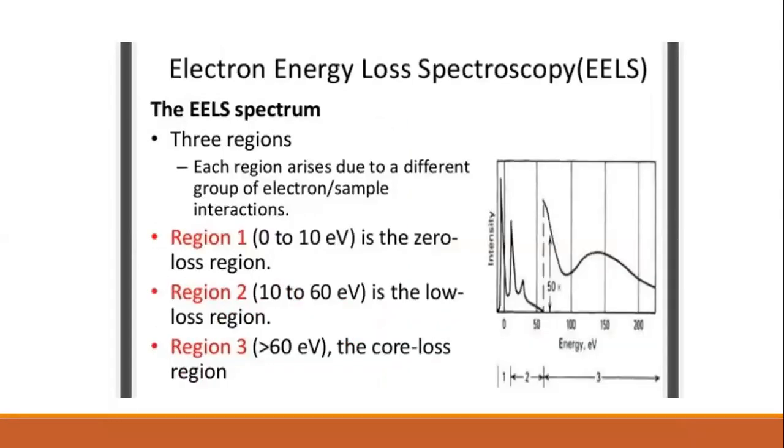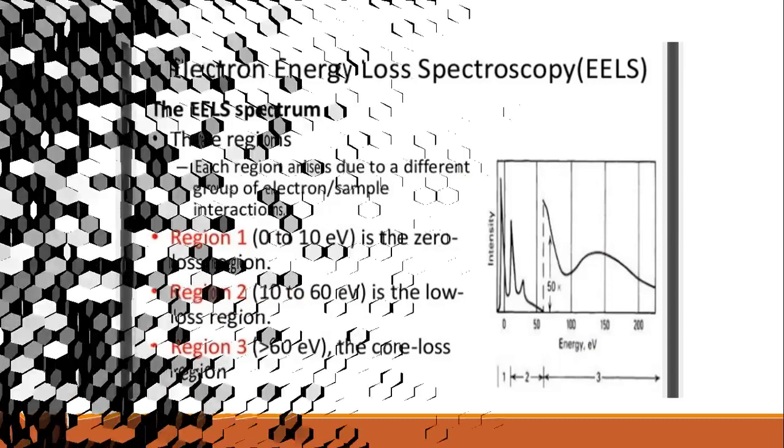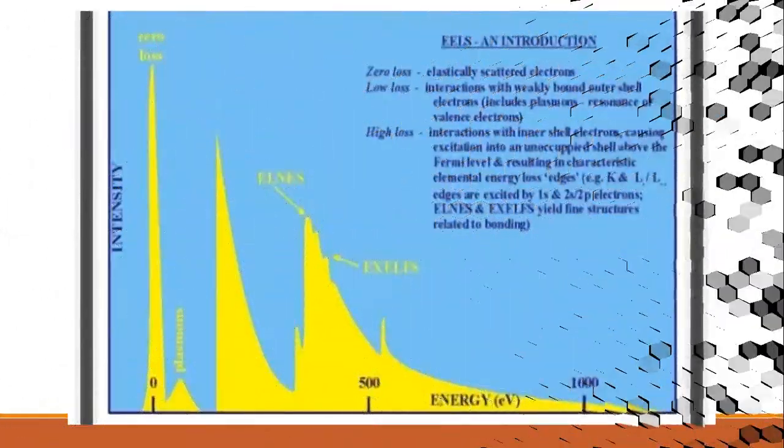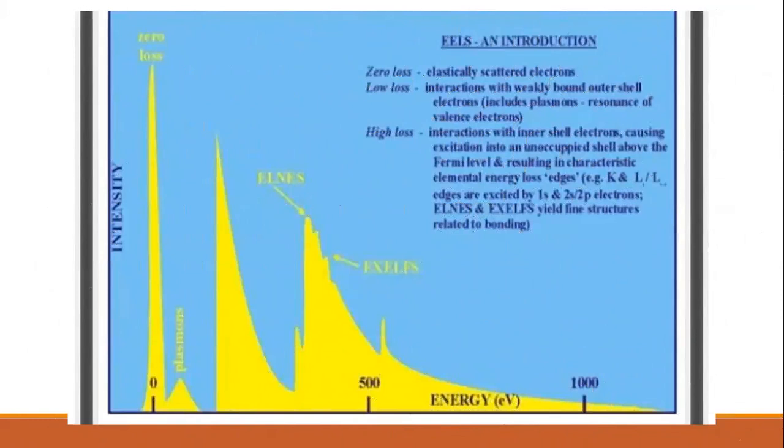The ELS spectrum has three regions. Each region has to rise due to different groups of electrons or sample interactions. First region is called the zero loss region, zero to ten electron volts. Second region, ten to sixty electron volts, is the low loss region. Third region, the core loss region, is greater than sixty electron volts.